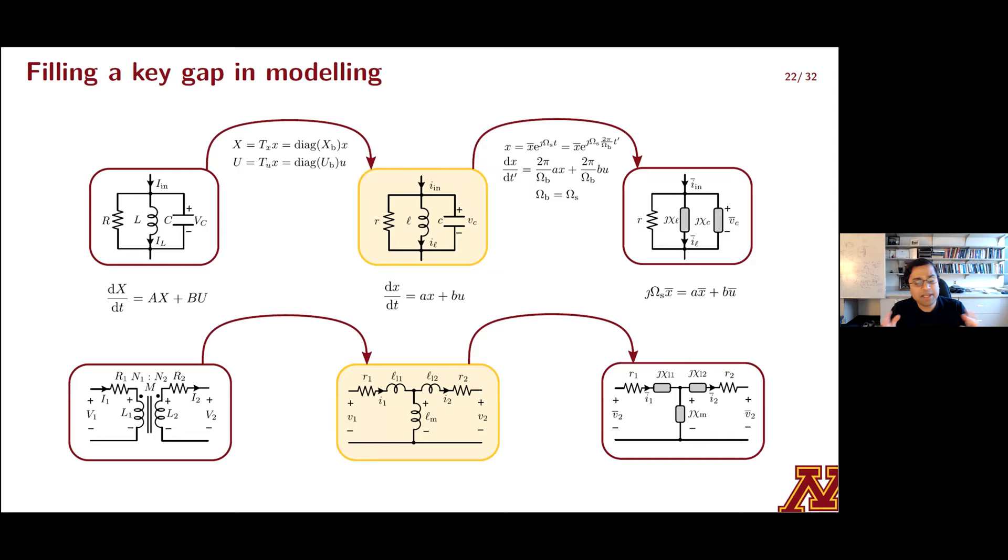And then finally, we are able to derive some conventional phasor domain per unit models for the linear setting as a special case. So while motivating these per unit models, I talked about two ends of the spectrum that are widely studied in the literature, SI unit ODE models, and phasor domain algebraic models. These are shown for an RLC circuit and a single-phase transformer on the very extremes of the slide in boxes that are shaded red. Now, indeed, there is something in the middle. And this is our per unit dynamic model, which is obtained from that SI model by normalizing state variables and inputs. You'll note that the per unit dynamic model for the transformer does not include an ideal transformer, as would be the case with a conventional per unit phasor model for a transformer.